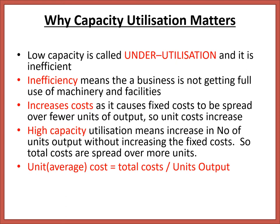High capacity utilization means increasing the number of units output without increasing fixed costs, so total cost is spread over more units. The average unit cost formula is: total costs divided by number of units output. The lower your average cost, the more profit you'll be making and the more contribution to fixed costs there will be, enabling greater overall profit.